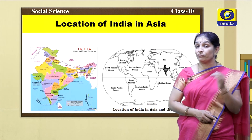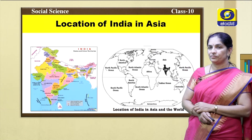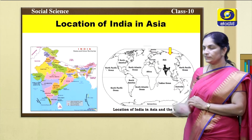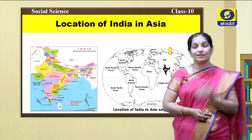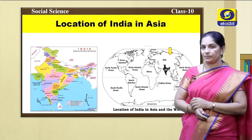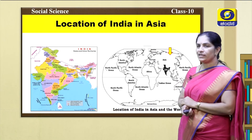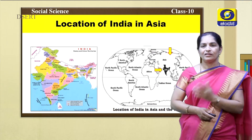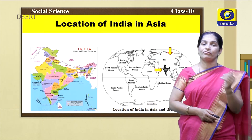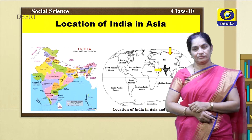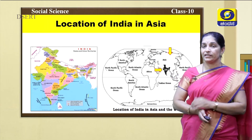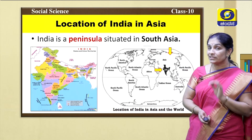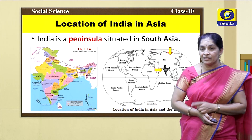Now let us know the location of India in Asia. Look at the world map. Where is Asia? This is Asia. Asia is the largest continent in the world. And in Asia, where is India? This is India. India is situated in South Asia.